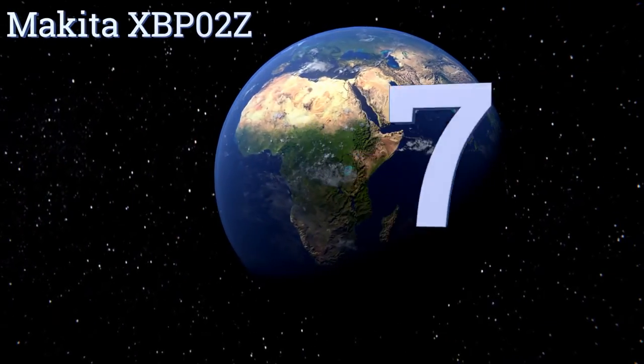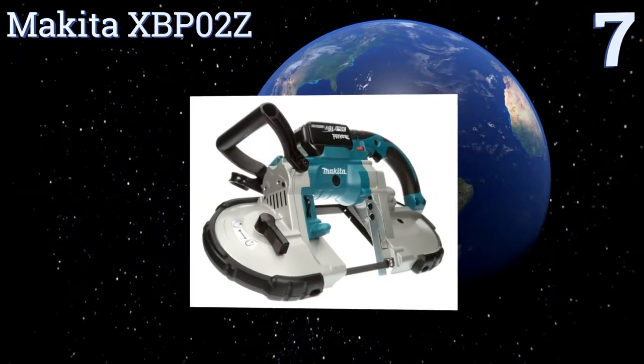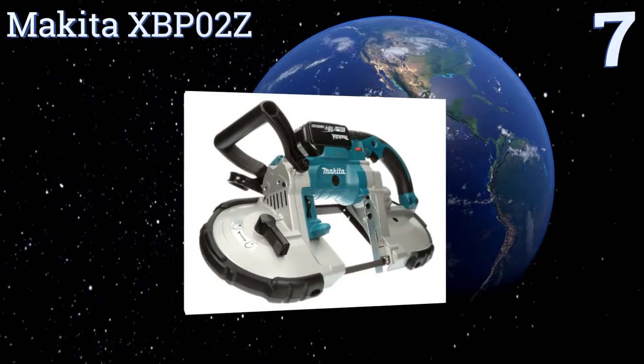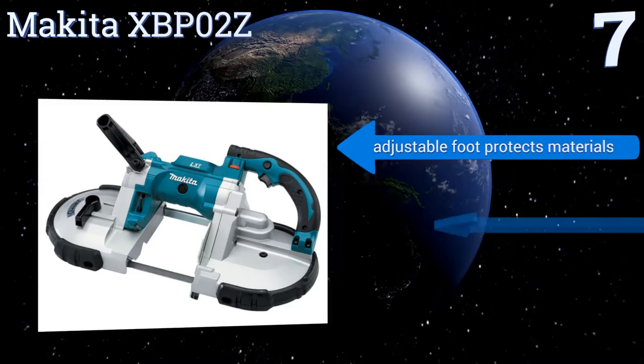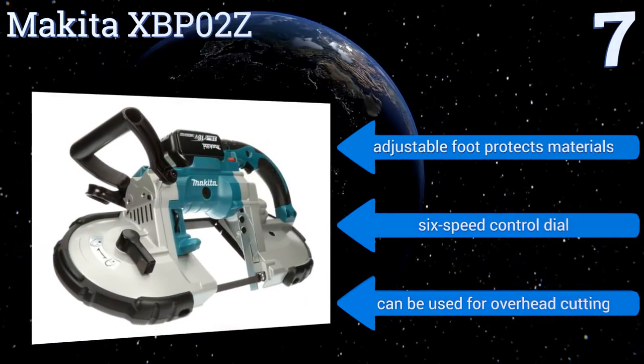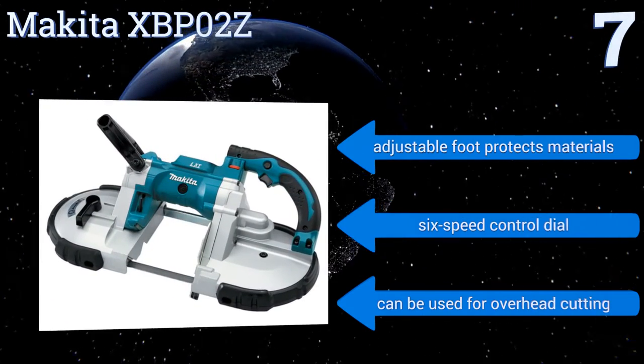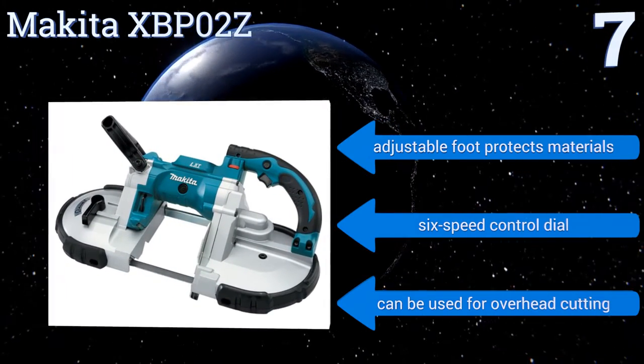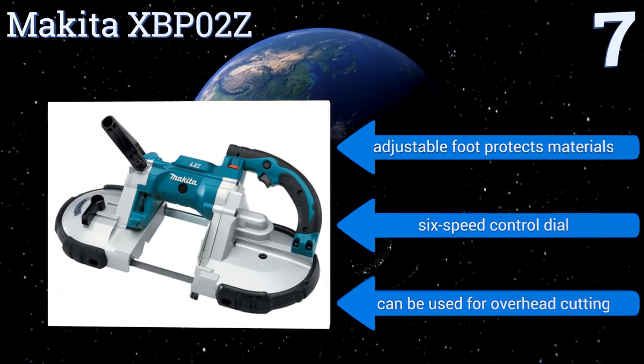At number 7, the handheld Makita XBP02Z brings plenty of metal-cutting power to any job, thanks to its easy portability, high-torque motor, and long-lasting 18-volt lithium-ion slide-style battery. The unit weighs less than 15 pounds and offers speeds up to 530 sfpm. Its adjustable foot protects materials, and it has a 6-speed control dial. It can be used for overhead cutting, too.